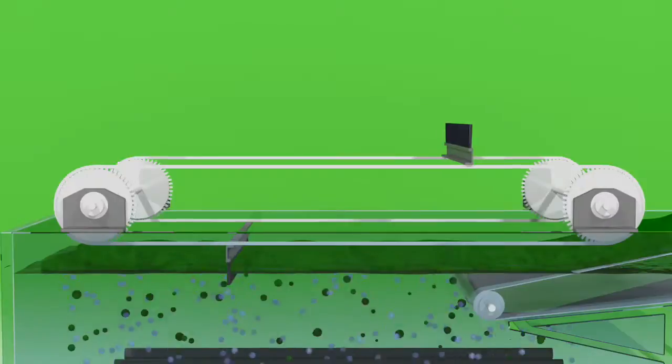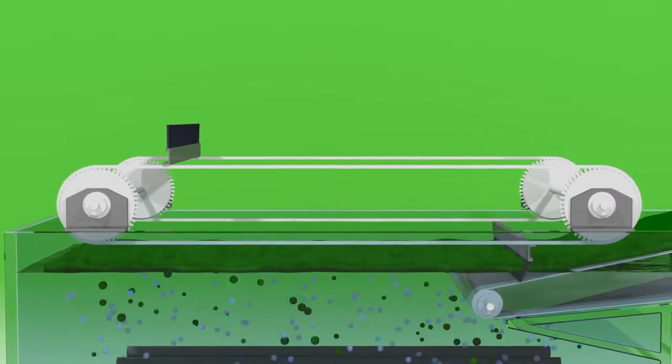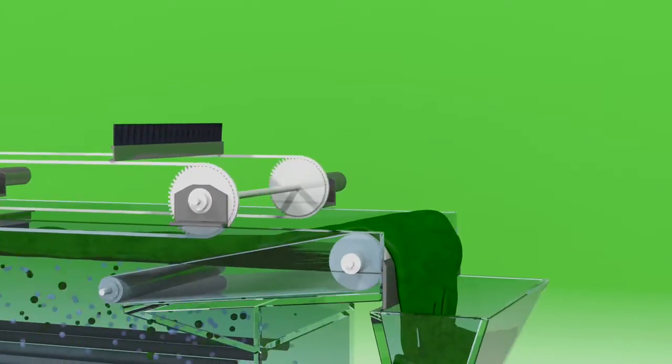In the tank the algae hit a wall of bubbles which causes them to float up to the surface of the water and at that point we apply a mechanical process with a rake and a dewatering belt assembly and then the doctor blade draws it off of the belt at the end and you have a dried algae mass.